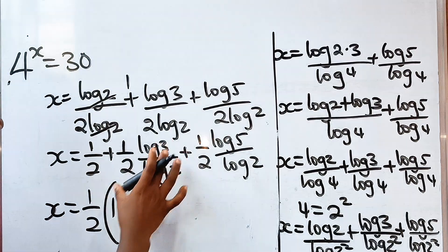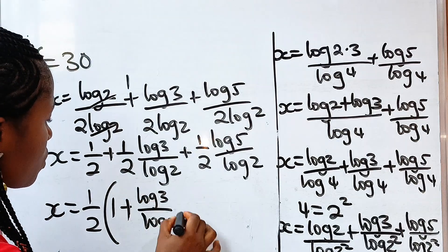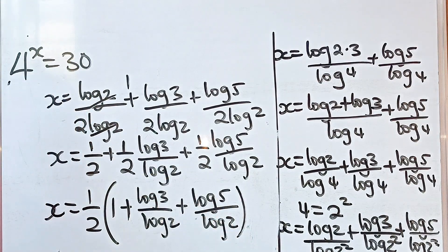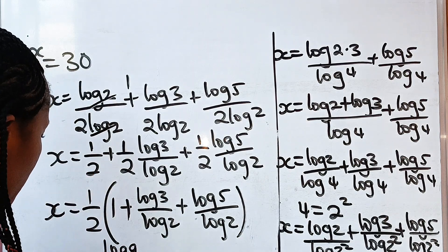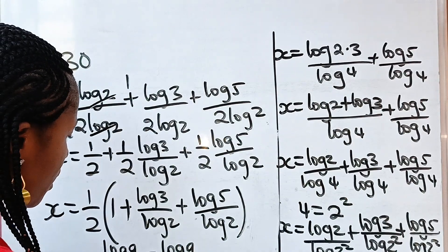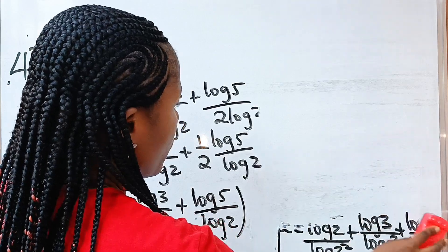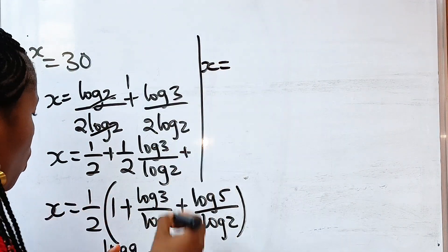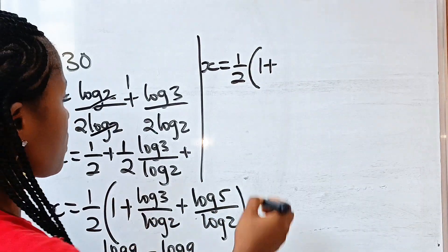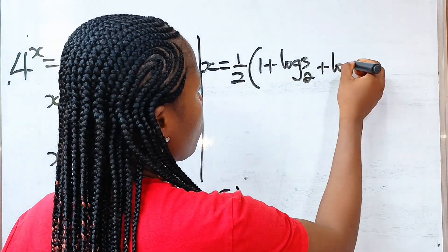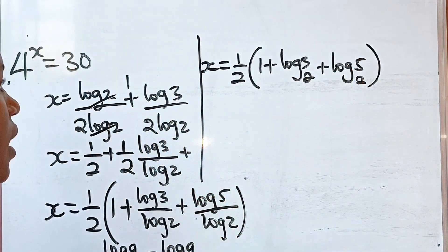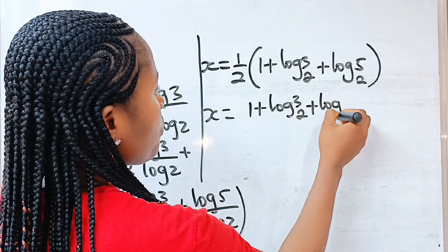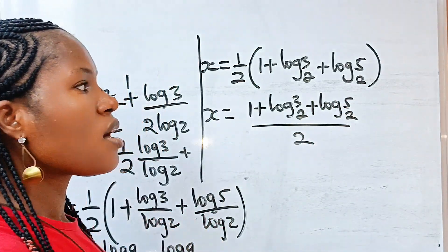Factoring out one-half, x equals one-half times (1 plus log3/log2 plus log5/log2). Now, remember that log a divided by log b equals log base b of a. So this becomes x equals one-half times (1 + log₂3 + log₂5), which we can also write as x equals (1 + log₂3 + log₂5) divided by 2.